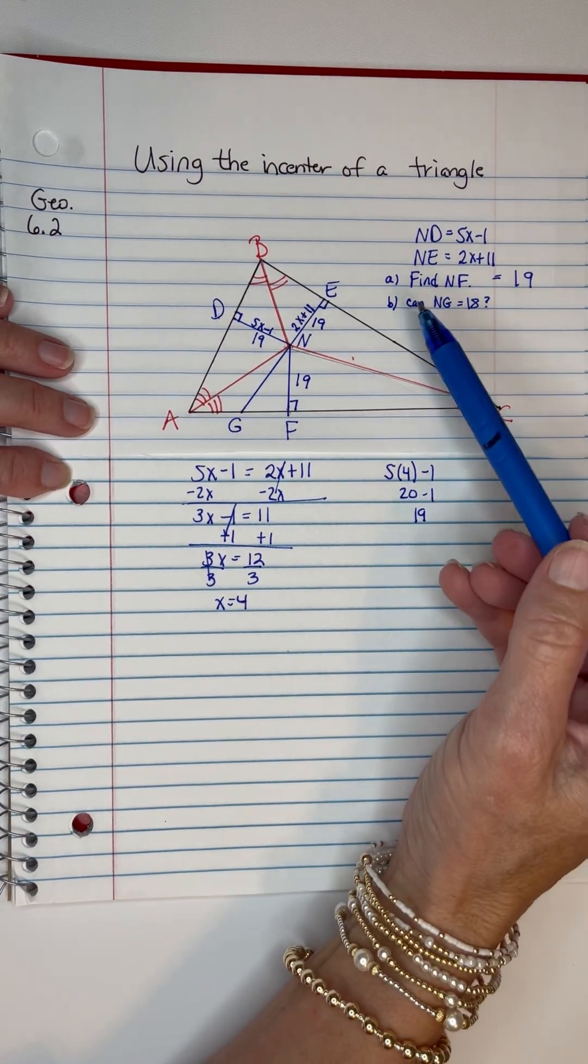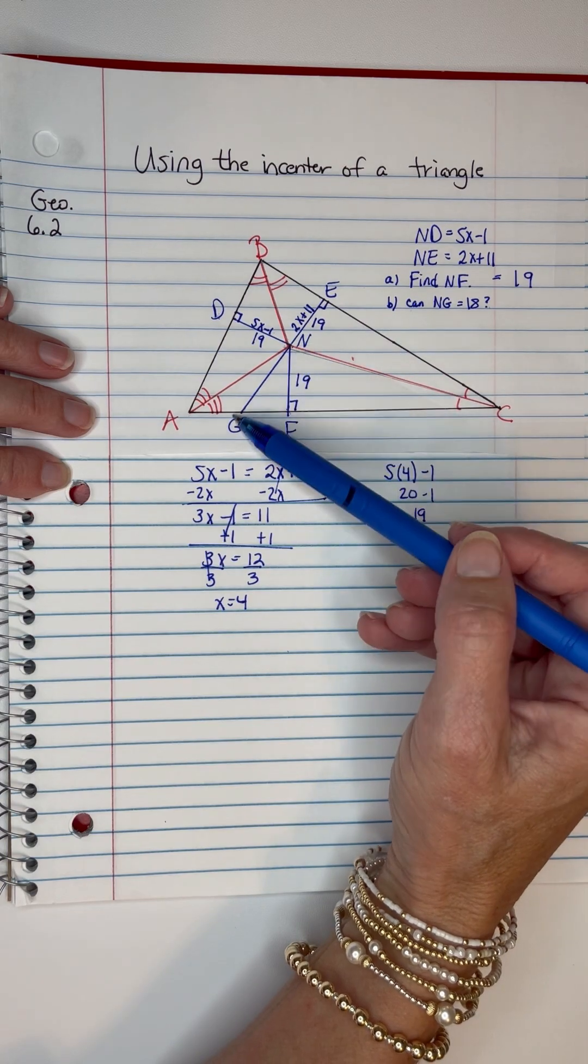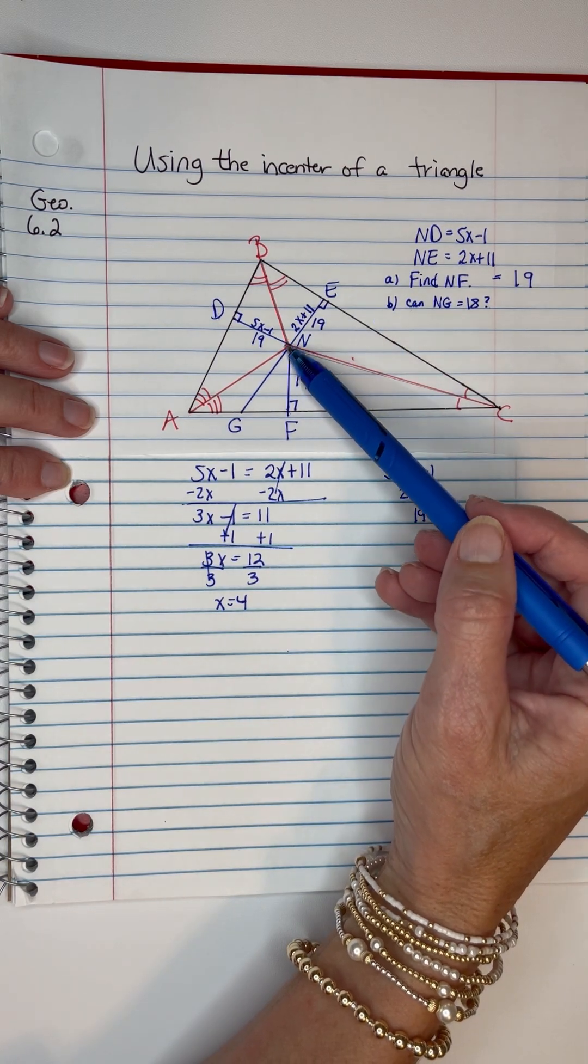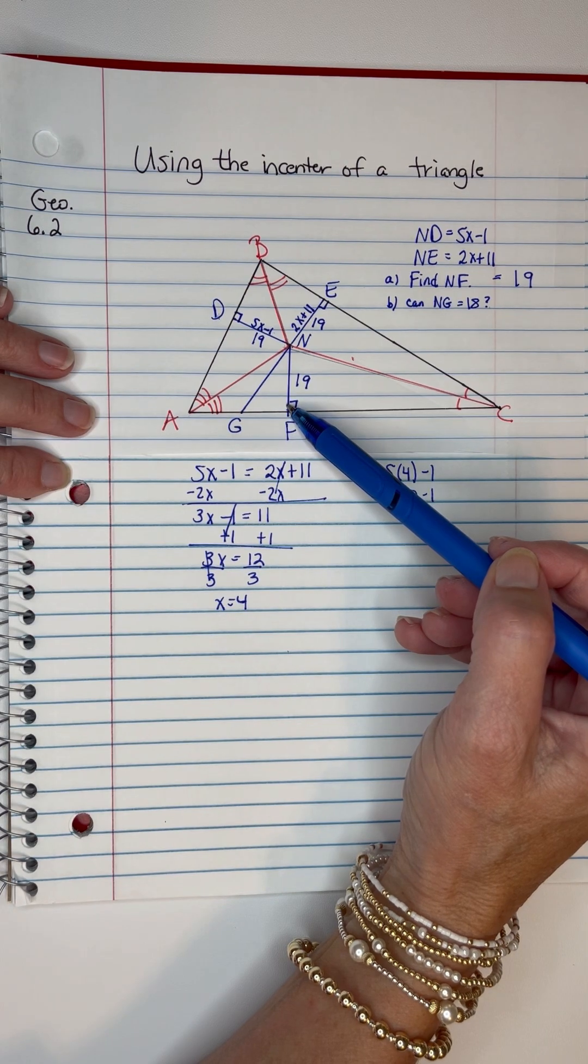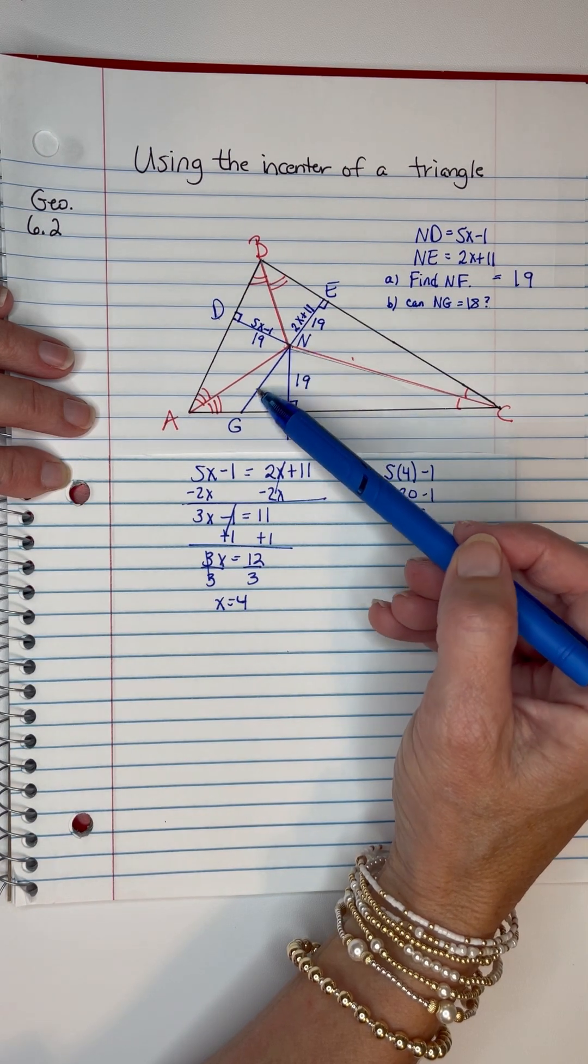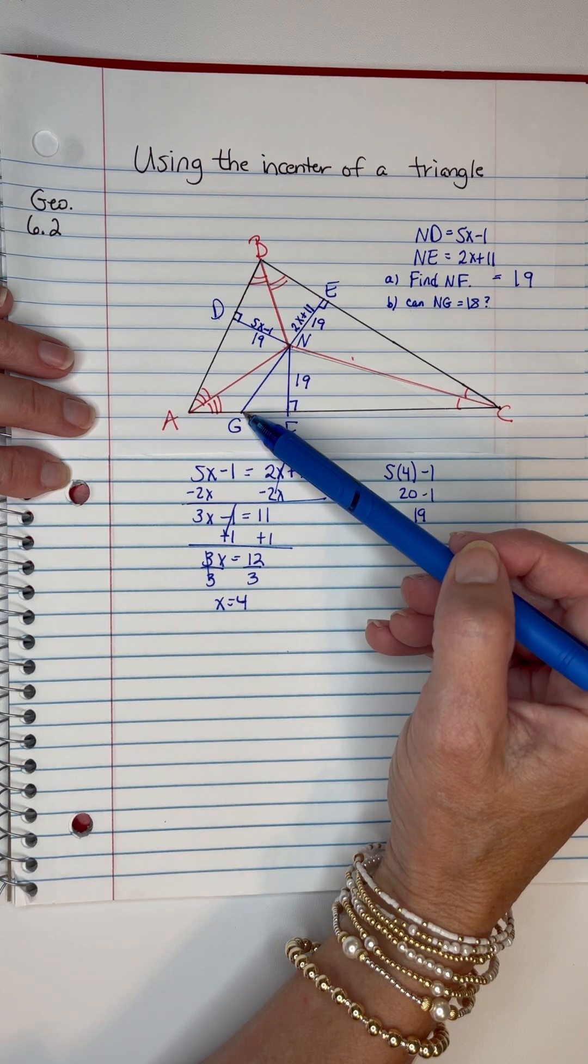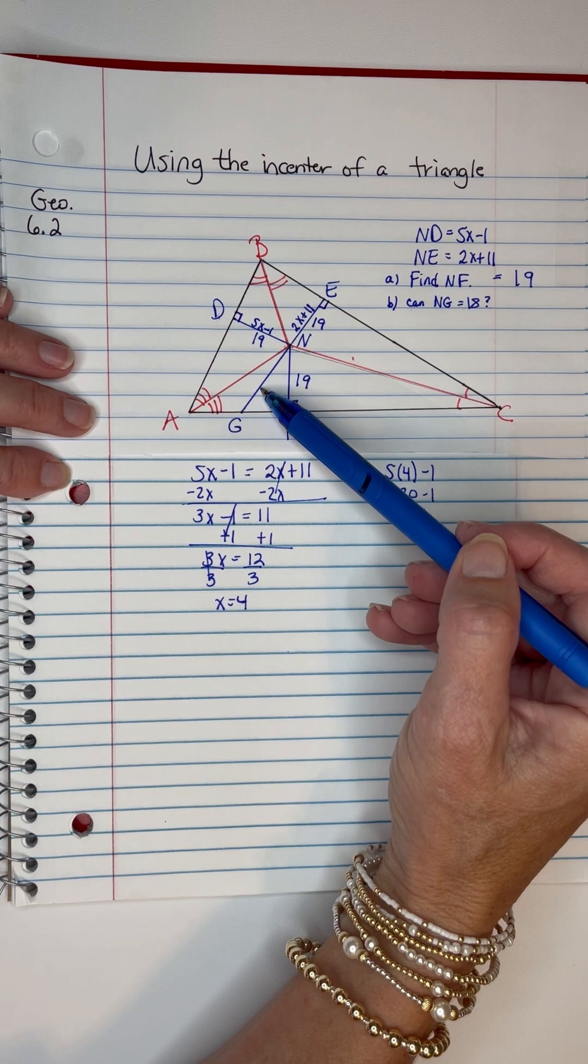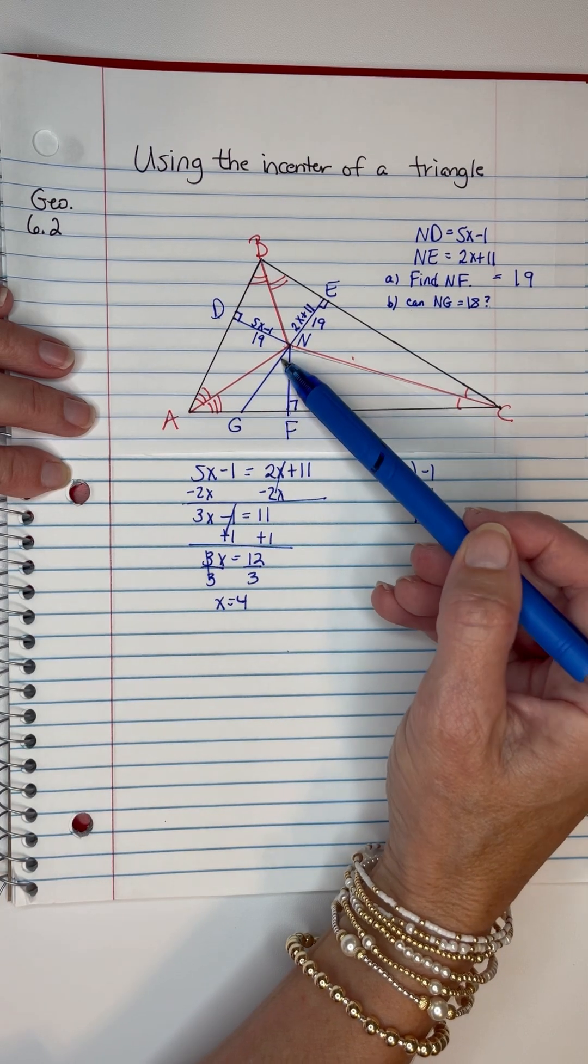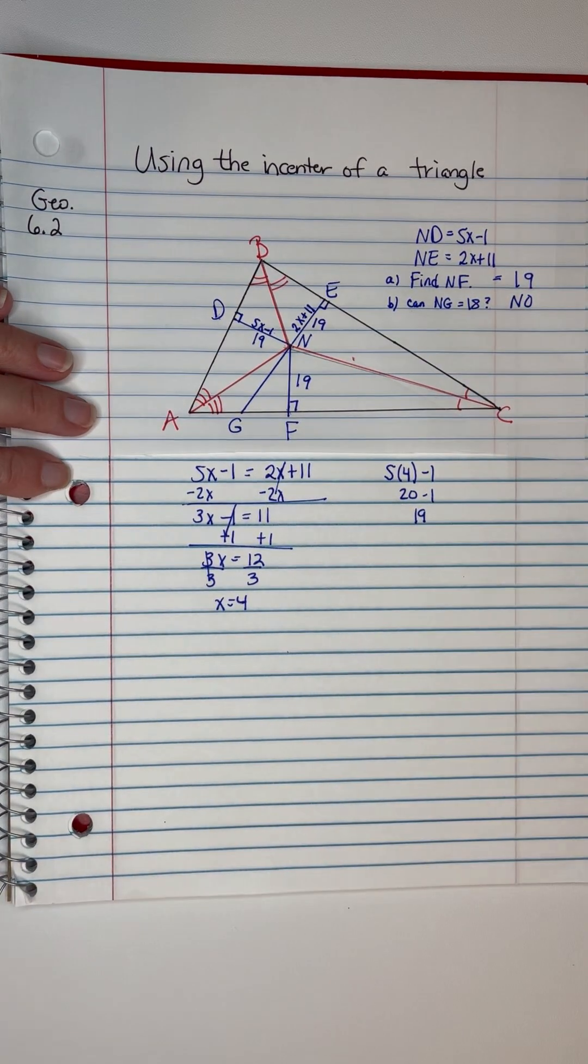Now the second question asked, can NG be equal to 18? Well, let's look at NG. It just extended off of EN. And if you'll notice, this is a right angle here. And that would be a hypotenuse of a right angle. And the hypotenuse is always the longest line. So they're asking if it can be 18. Well, it can't be 18 because this side is 19. It's got to be longer than 19. So can it be 18? No, it cannot.